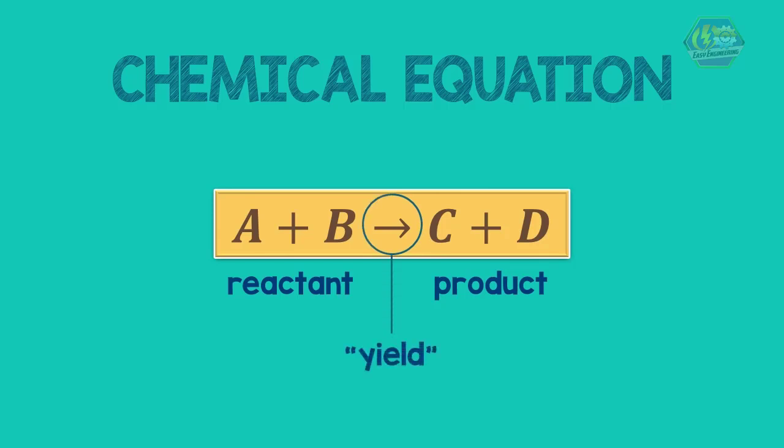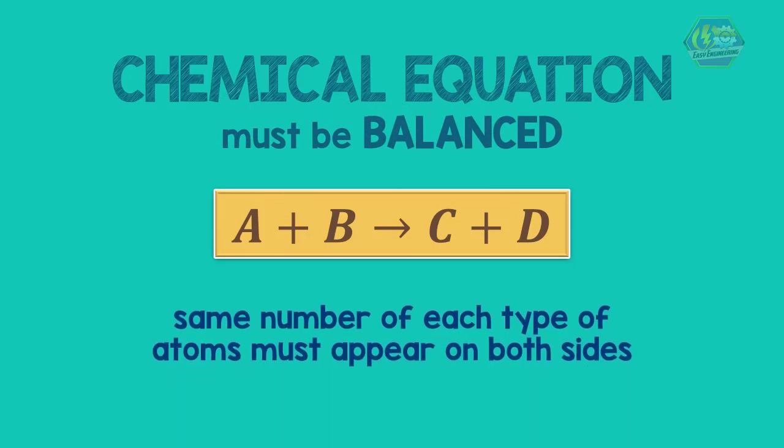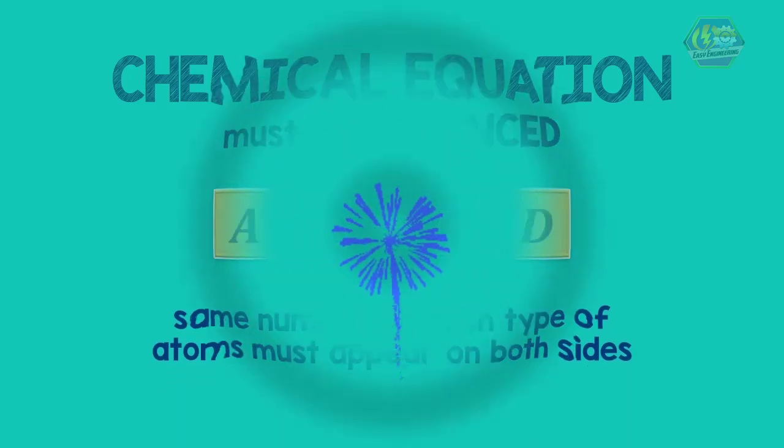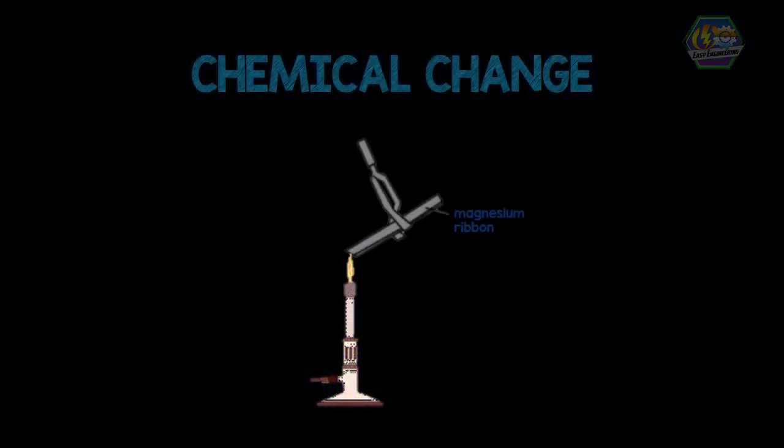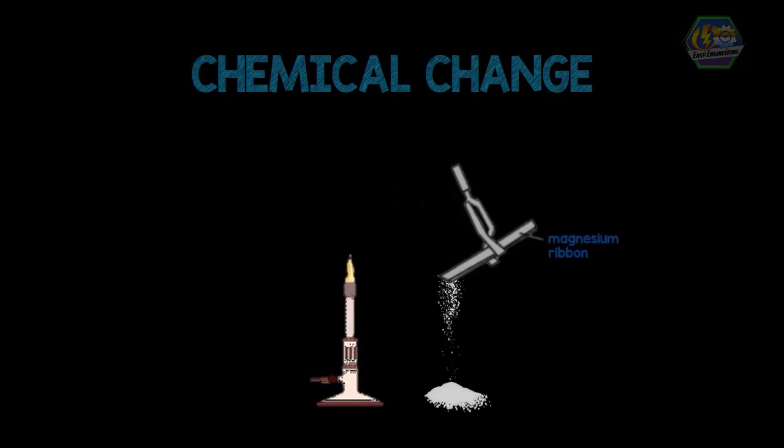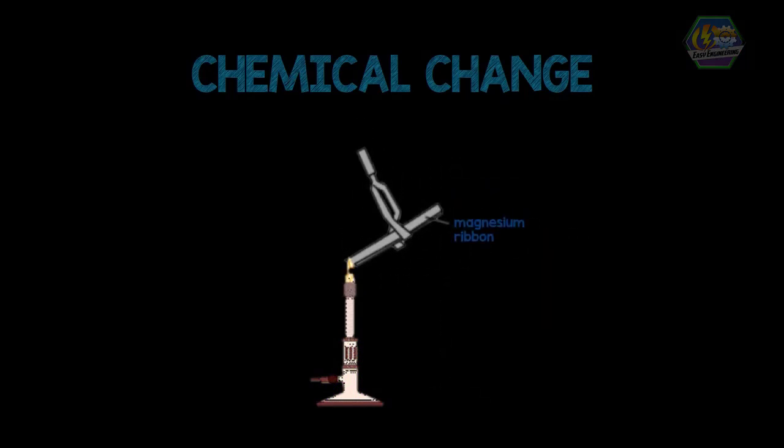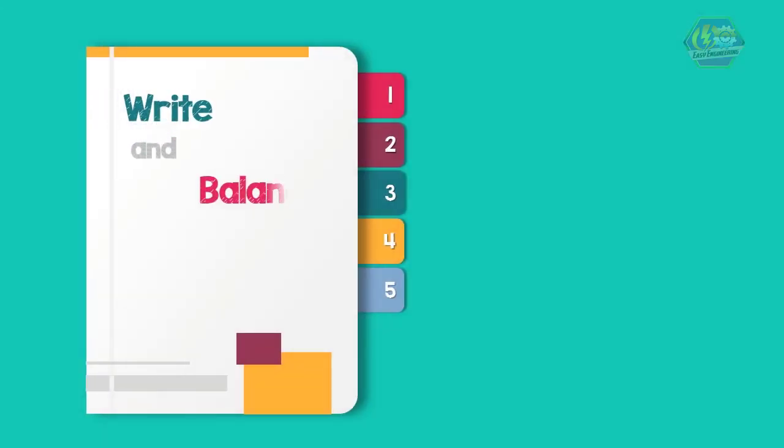To present a chemical change quantitatively, the equation must be balanced. That is, the same number of each type of atom must appear on both sides. As an example, here is a description of a chemical change that occurs in many fireworks: a magnesium strip burns in oxygen gas to yield powdery magnesium oxide. We know that this reaction also produces light and heat, but here we are only concerned with these substances. We will write and balance the equation in a step-by-step manner.